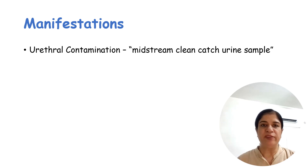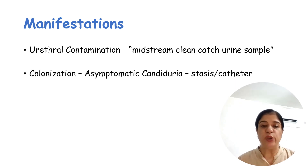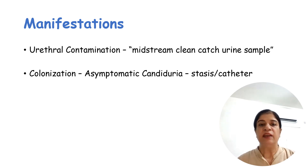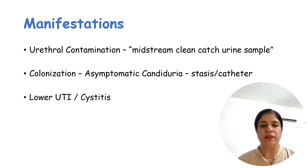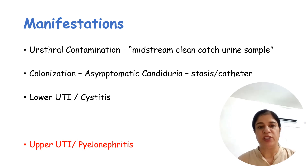Manifestations can include contamination due to urethral contamination, which is why a properly collected midstream clean-catch urine sample is very important. There can also be colonization — due to the presence of a catheter or stasis — which presents as asymptomatic candiduria. Then it can be a lower UTI or an upper UTI.